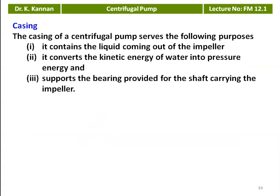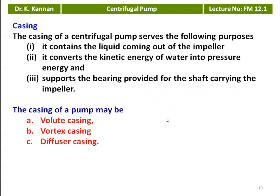The casing of the centrifugal pump serves the following purposes: it contains the liquid coming out of the impeller; it converts the kinetic energy of the water into pressure energy — because the casing has a flow passage of constantly increasing area acting as a diffuser, which increases pressure by decreasing kinetic energy; and it supports the bearings provided for the shaft carrying the impeller. The casing may be volute casing, vortex casing, or diffuser casing.